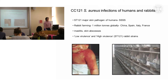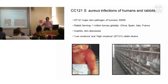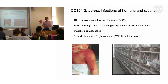In rabbits, the ST121s cause mastitis and skin abscesses. They have been defined as a highly virulent strain because they really do seem to spread very rapidly in these rabbit farms and cause quite nasty progressive skin infections.